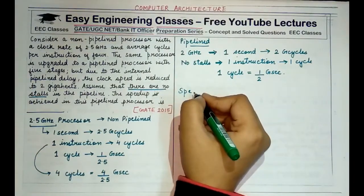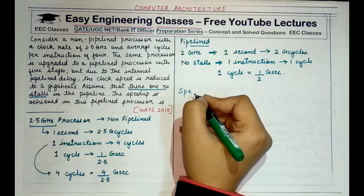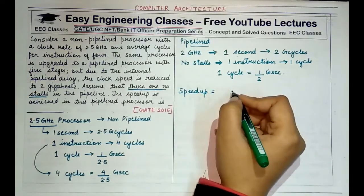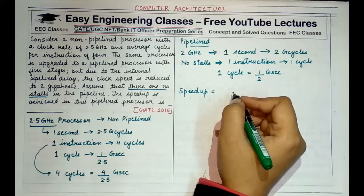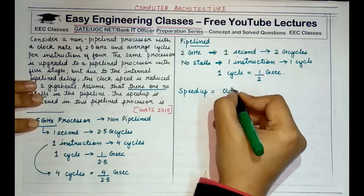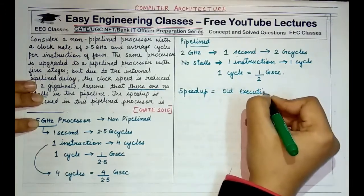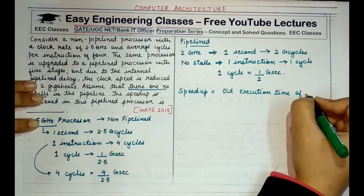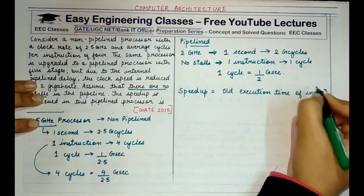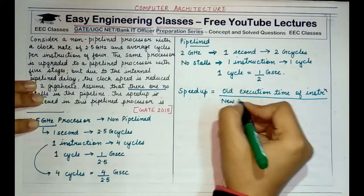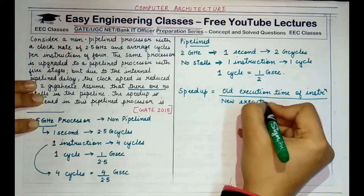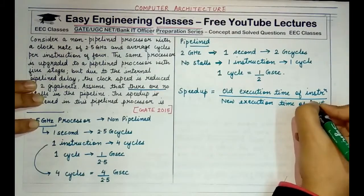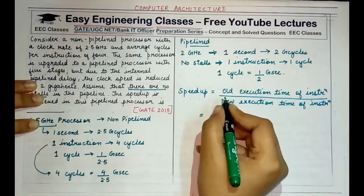Speedup is nothing but the time taken by the old processor which was not pipelined or time taken by a single instruction to complete in the new processor. So I can write it as old execution time of an instruction and this would be divided by new execution time of a single instruction. The comparison should be the same. So, what is the values on the numerator and denominator?